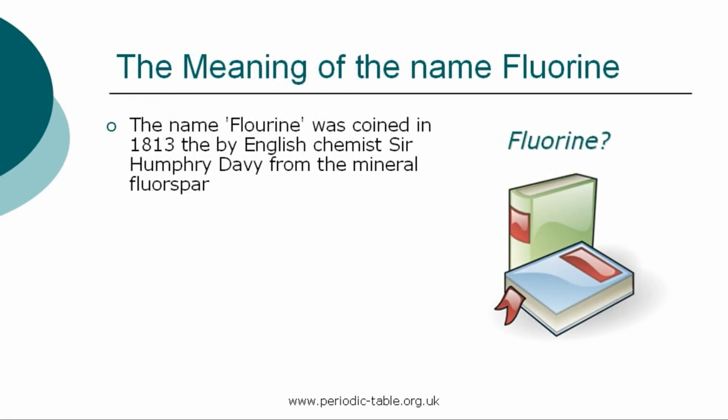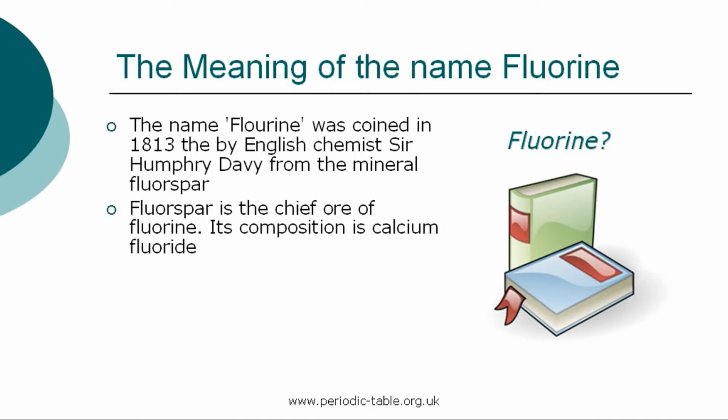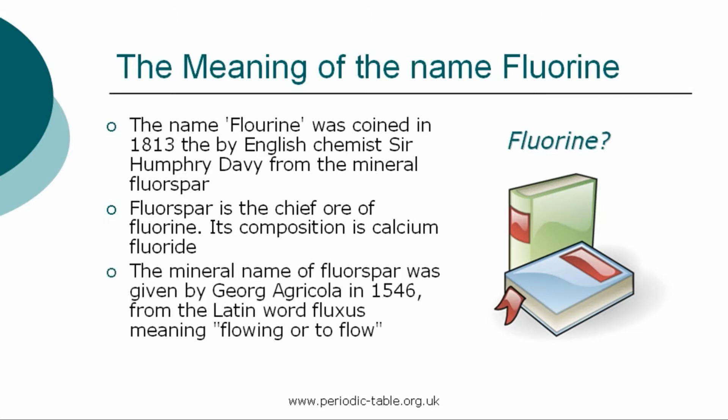The name fluorine was coined in 1813 by the English chemist Sir Humphrey Davy, from fluorspar, the name of the mineral where it was first found. Fluorspar is the chief ore of fluorine, and its composition is calcium fluoride. The mineral name was given by Georg Agricola in 1546, translating the German name flus from the Latin word fluxus, meaning flowing or to flow. In metallurgy, a flux is also derived from the Latin word fluxus and is a chemical cleaning agent or flowing agent.